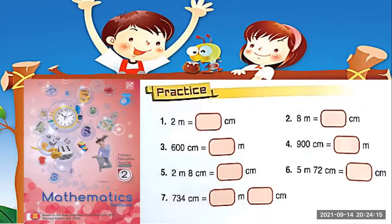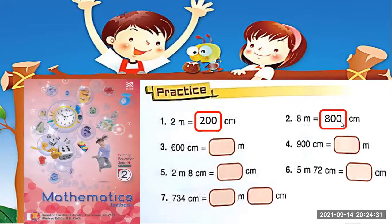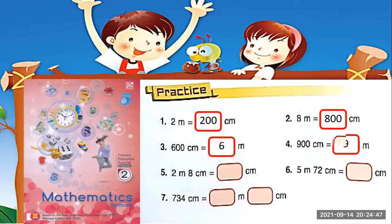Now let's try to convert these. Number 1: 2m equals how many centimeters? 2m equals 200cm. Number 2: 8m equals 800cm. Number 3: 600cm equals 6m.